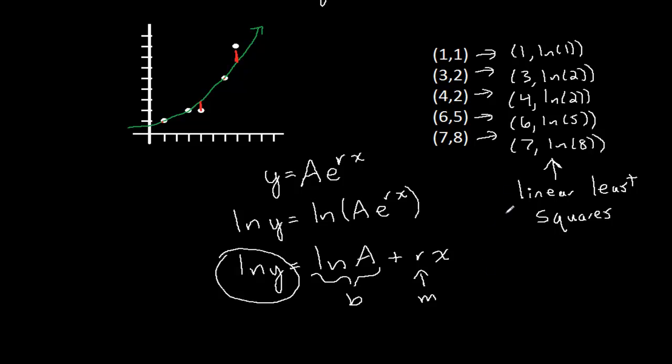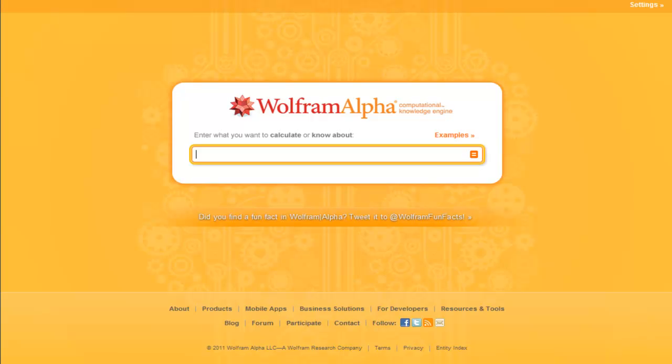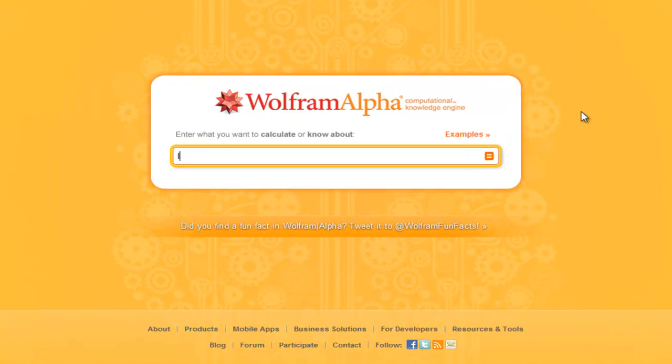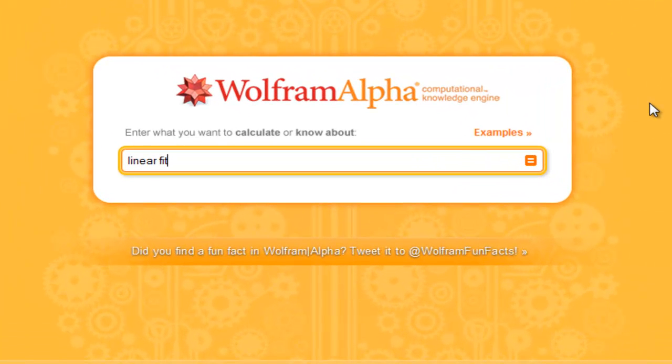Okay, so to do this, we're going to plug this into Wolfram Alpha. So let me pull that up here. And I'm going to do a linear fit on, let's see, (1, ln(1)). That just ends up being 0. I'll go ahead and put that in there.